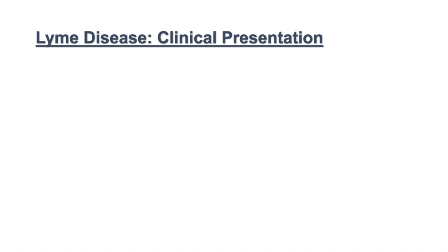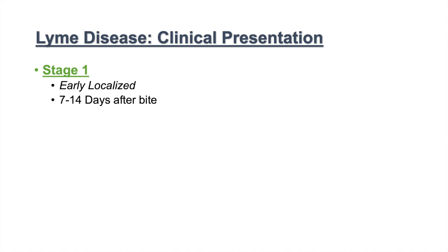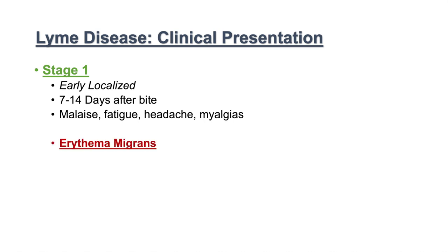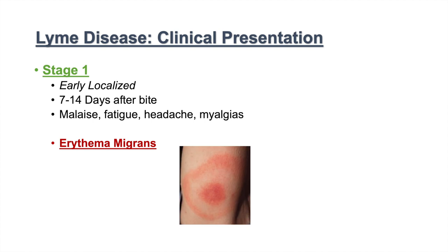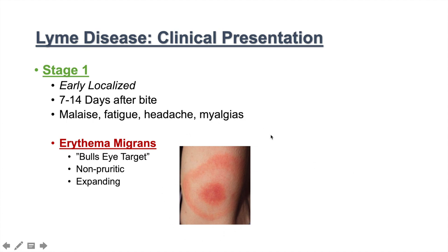The clinical presentation of Lyme disease changes as time progresses. There are three different stages. Stage one is considered an early localized stage of infection, usually occurring seven to 14 days after a bite. The patient experiences malaise, fatigue, headache, and myalgias. There is also a characteristic skin lesion known as erythema migrans, called the bull's eye target. It is non-pruritic and it expands — the outer ring continues to expand with a red center.